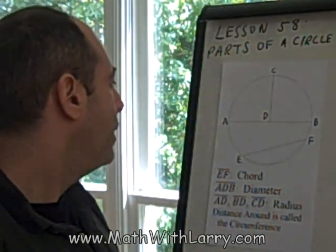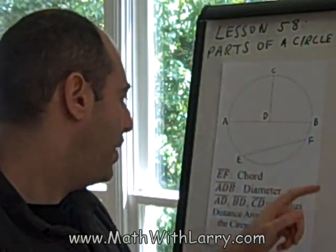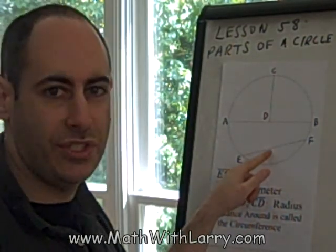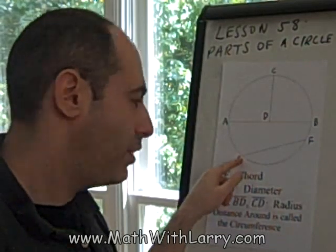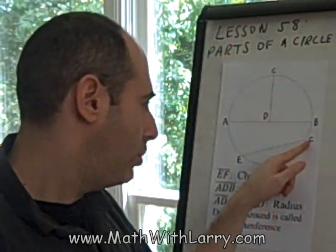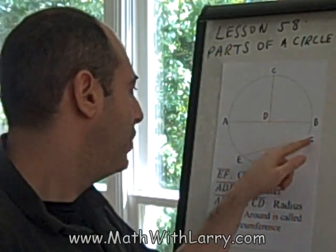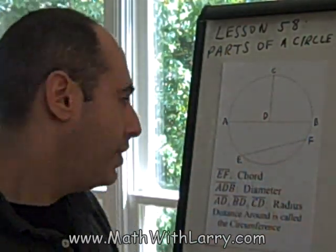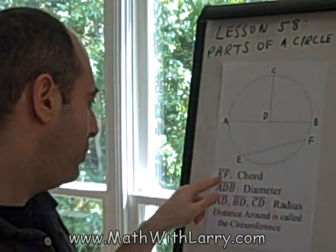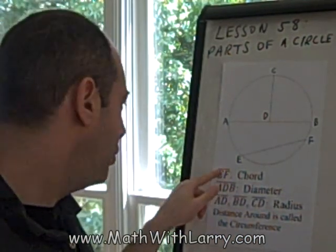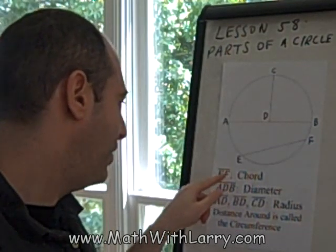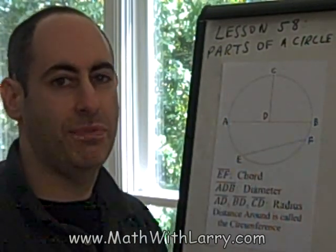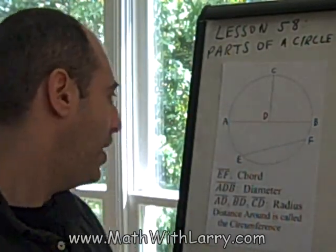In particular, in this circle, line segment EF is considered to be a chord. We define a chord as a line segment that starts anywhere along the edge of a circle and ends anywhere along the edge, but it does not go through the center, just like in this diagram here. I notated it using the letters EF with a straight line on top of it — that's the symbol for a line segment, showing that the line has a specific beginning and a specific end. So EF is called a chord.